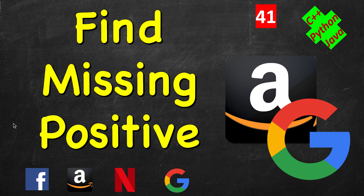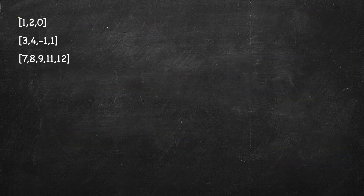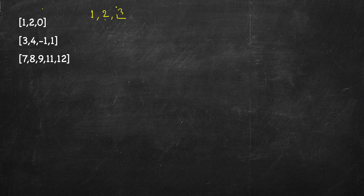In this problem we are given an array or list of numbers — some positive, some negative, even zero can be there. You have to find the first missing positive number, meaning the smallest positive number not in the list. For example, with [0,1,2]: 1 is present, 2 is present, 3 is not, so we return 3. Another example: if 1 is there but 2 is not, we return 2. If 1 is not there, we return 1.